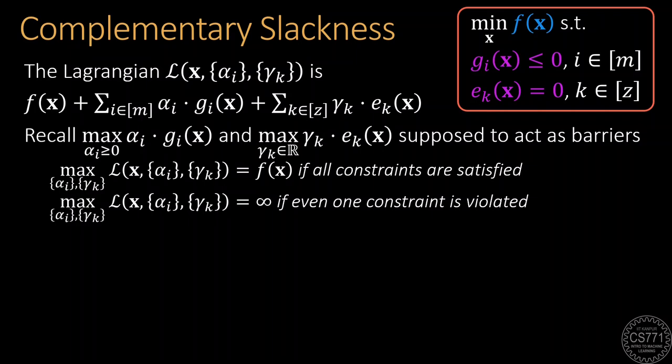When solving the primal problem, maximizing the Lagrangian over the dual variables yields the original objective function value if every constraint is satisfied and infinity if even one constraint is violated.